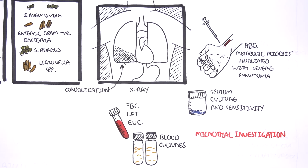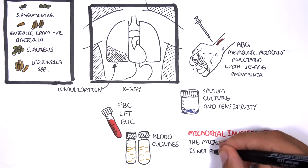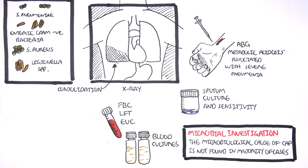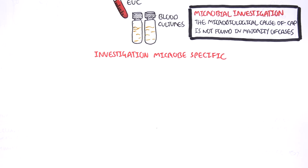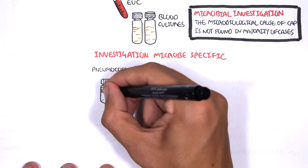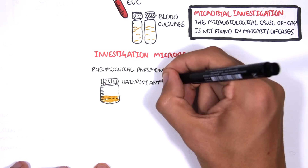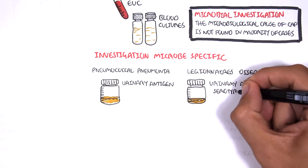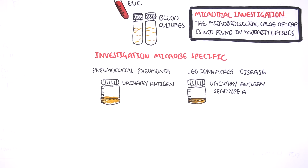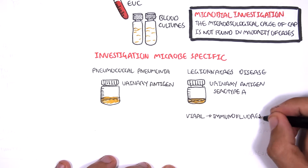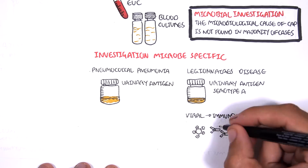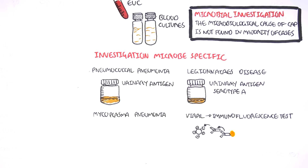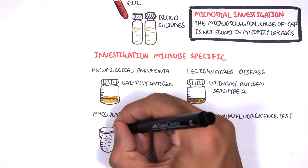The microbial cause of community-acquired pneumonia is not found in the majority of cases. Other investigations can be performed for specific microbes: for pneumococcal pneumonia, urinary antigen testing can be done; similarly for Legionella's disease, urinary antigen for serotype A can be performed. For viruses, immunofluorescent tests can be performed through swabs of the throat and upper respiratory tract. For Mycoplasma pneumoniae, complement fixation tests as well as direct diagnostic techniques can be used.